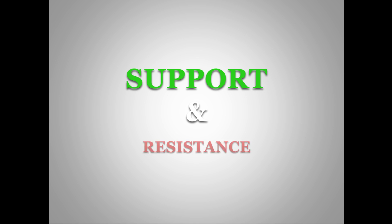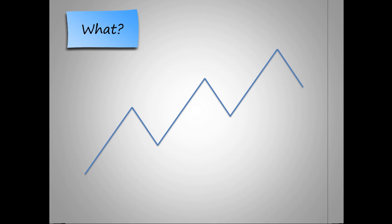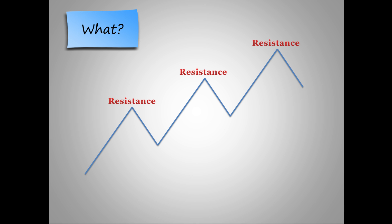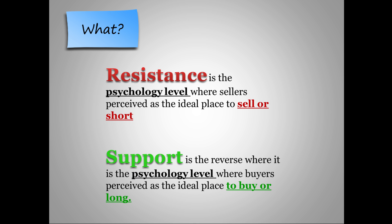Moving ahead, let us identify support and resistance points in trading charts. You will naturally be asking: what is support and resistance? For the uptrend illustrated, we can clearly see the price reversal at a higher high and a higher low. Price reversals at a higher high are called resistance levels, as they resist the price going higher. Price reversals at a higher low are marked as support levels, due to their resistance to going lower. Resistance is essentially a psychological level where sellers perceive it as an ideal place to sell or go short. Support is the reverse — a psychological level where buyers perceive it as a perfect place to buy or go long.